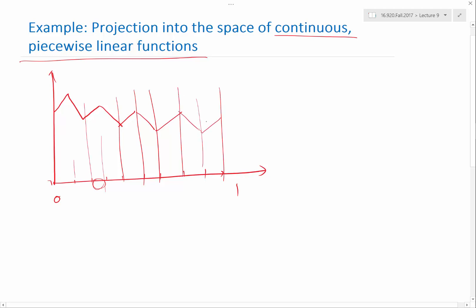But in between every element, the function can turn, it can have different slopes, but it cannot be discontinuous. It has to agree in value, but not in gradient at the element interface.